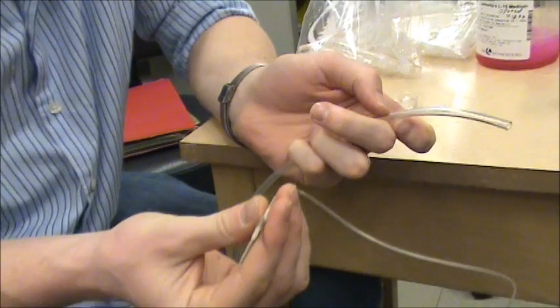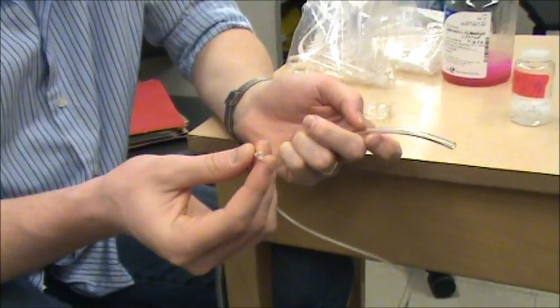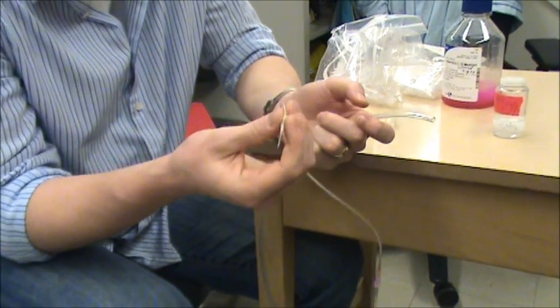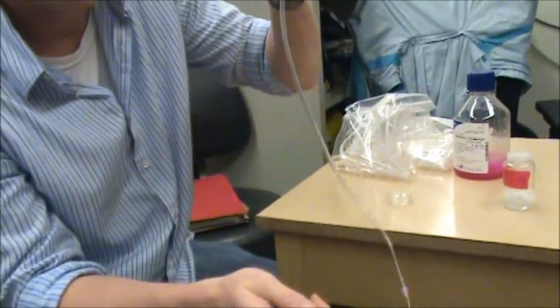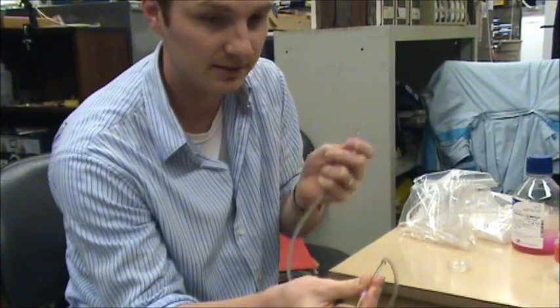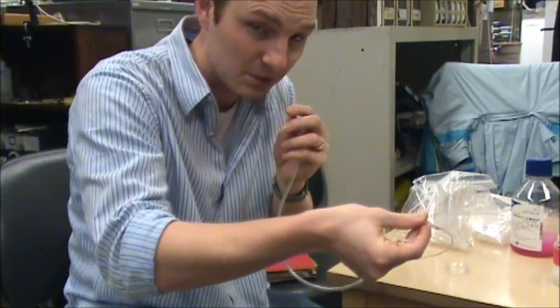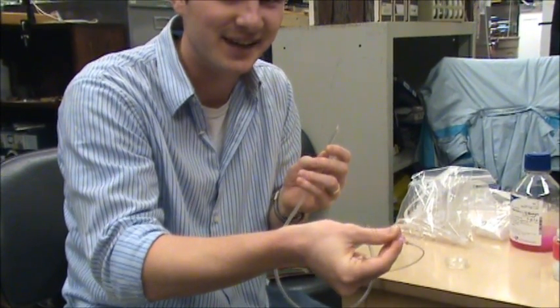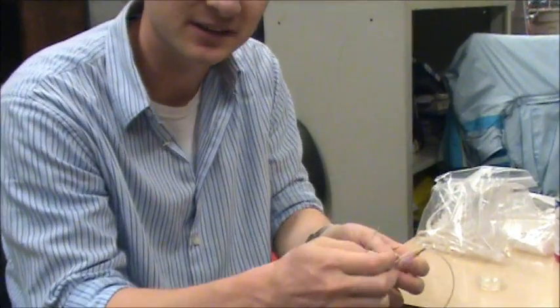And then this apparatus is what we use to actually aspirate the cells. So the pipette is taped onto the smaller tube and then it's fixed onto this plastic syringe and onto a larger tube, and we suck the cells right out of the ganglion.